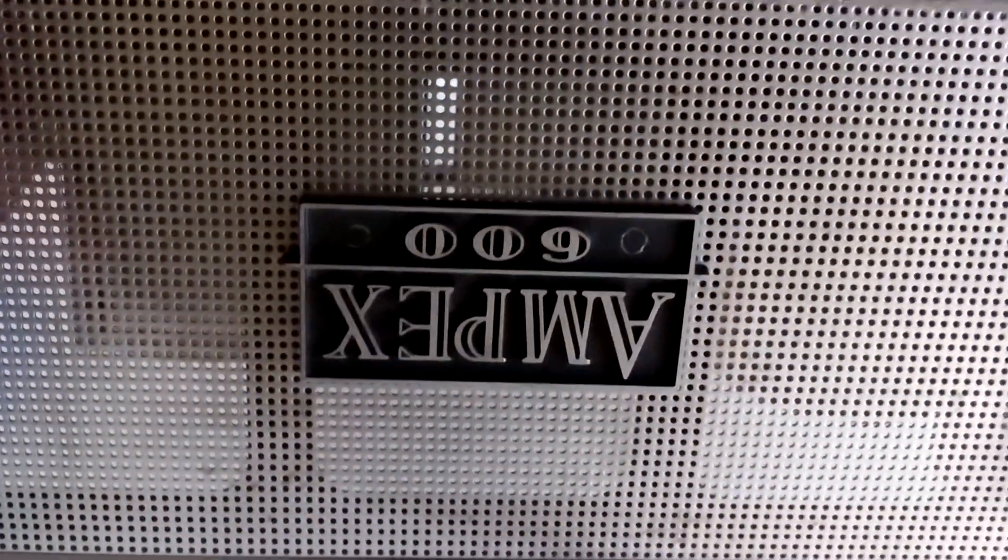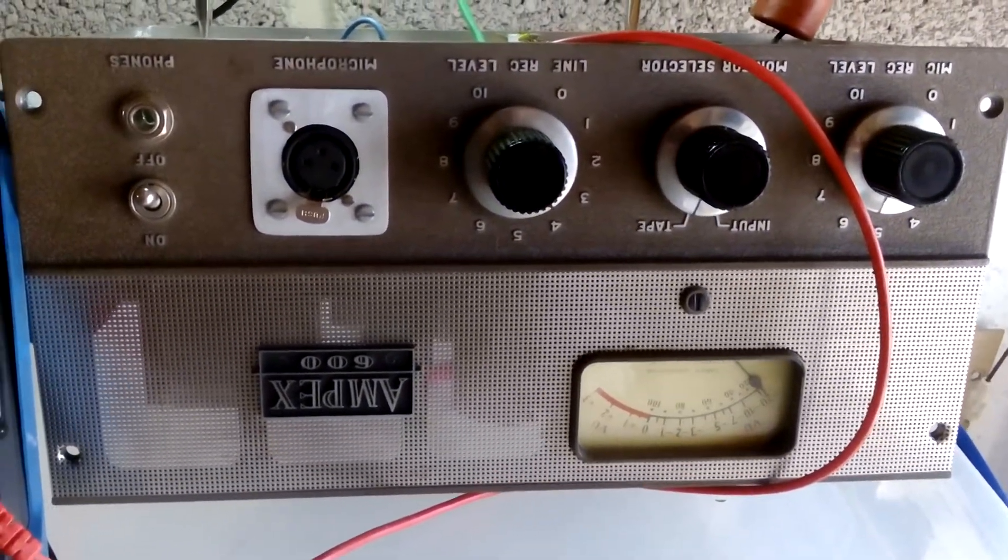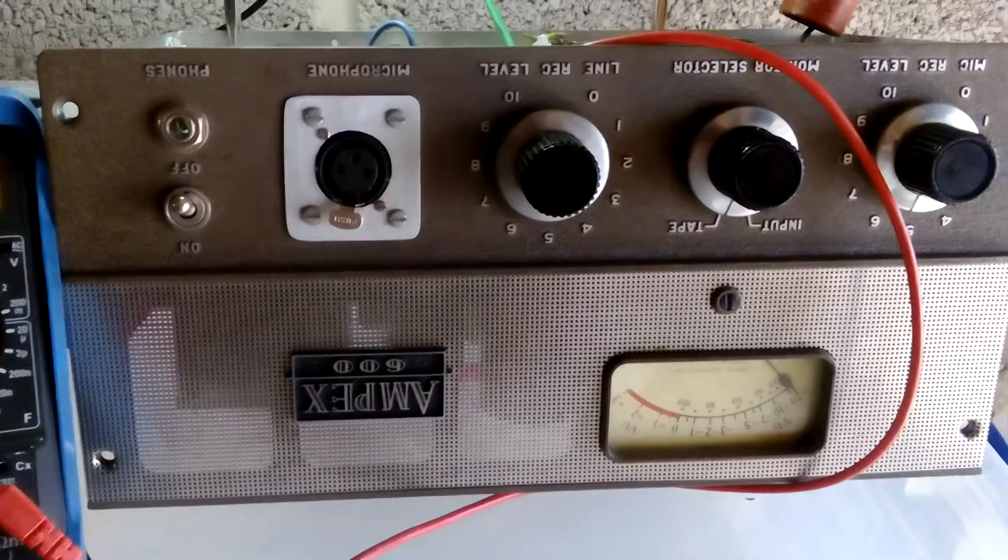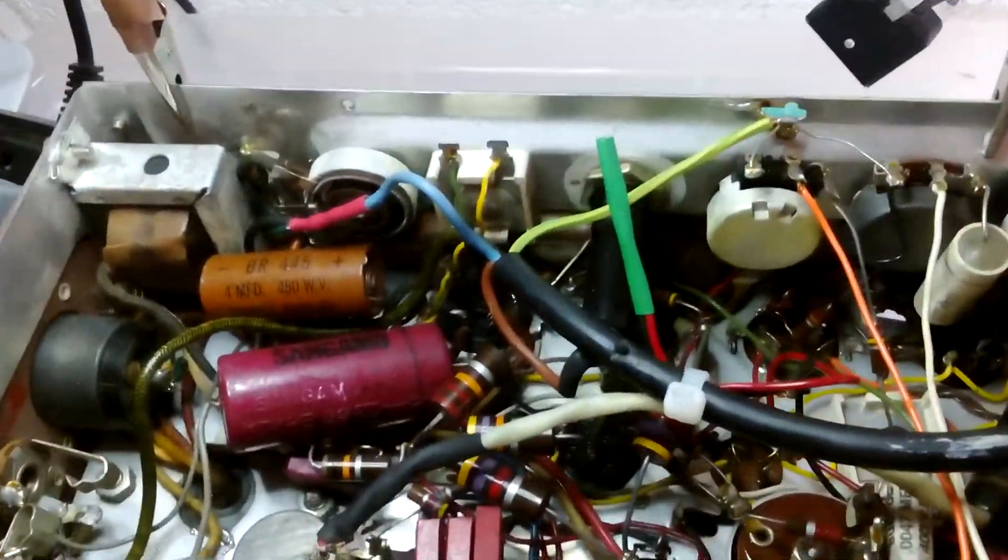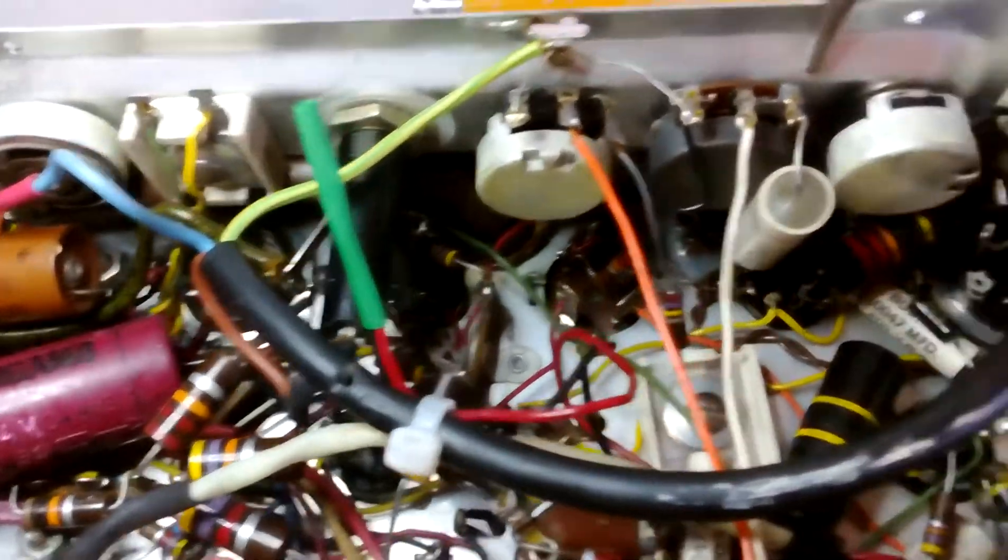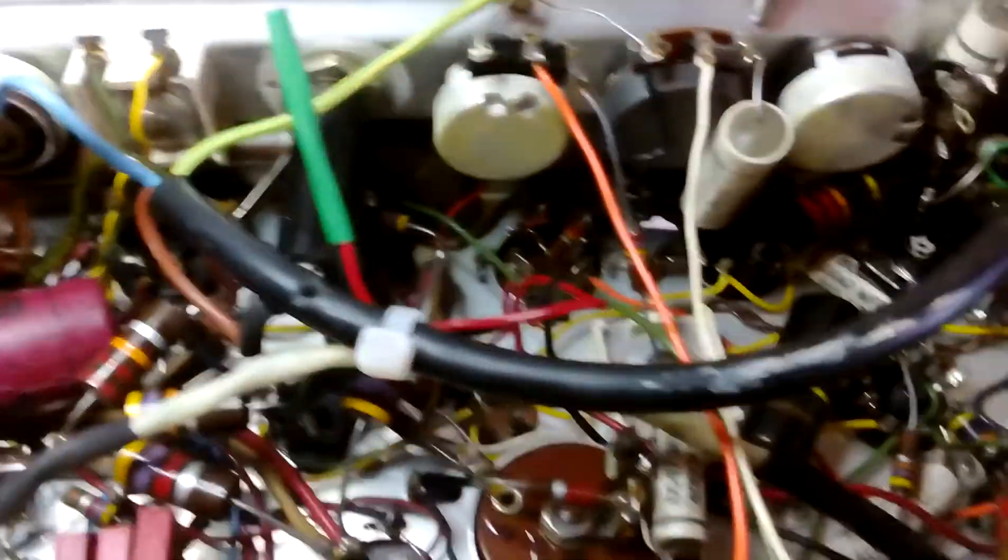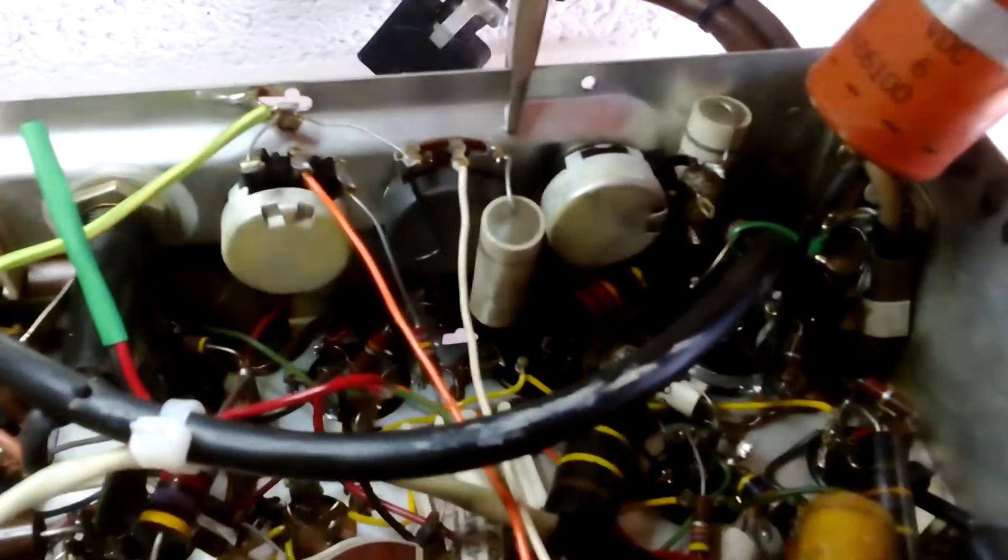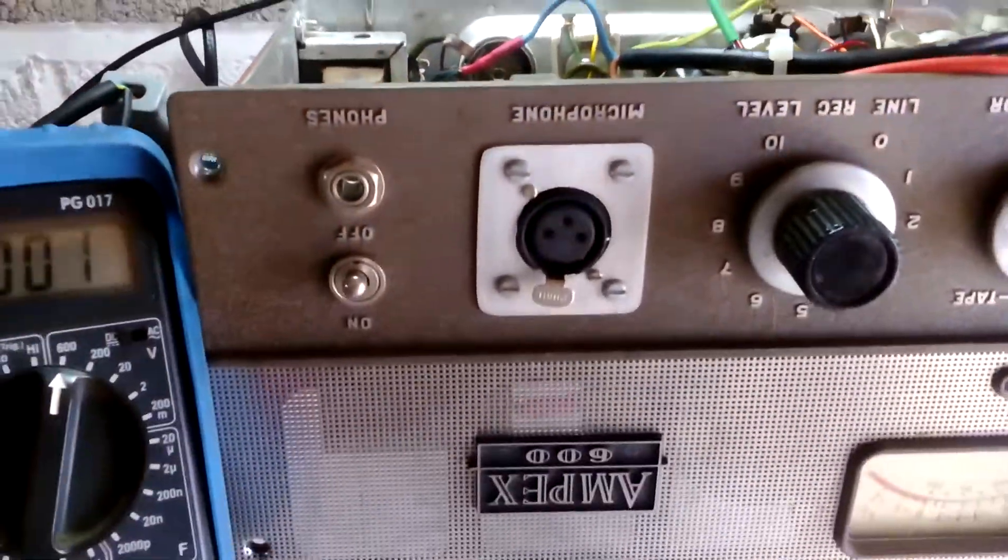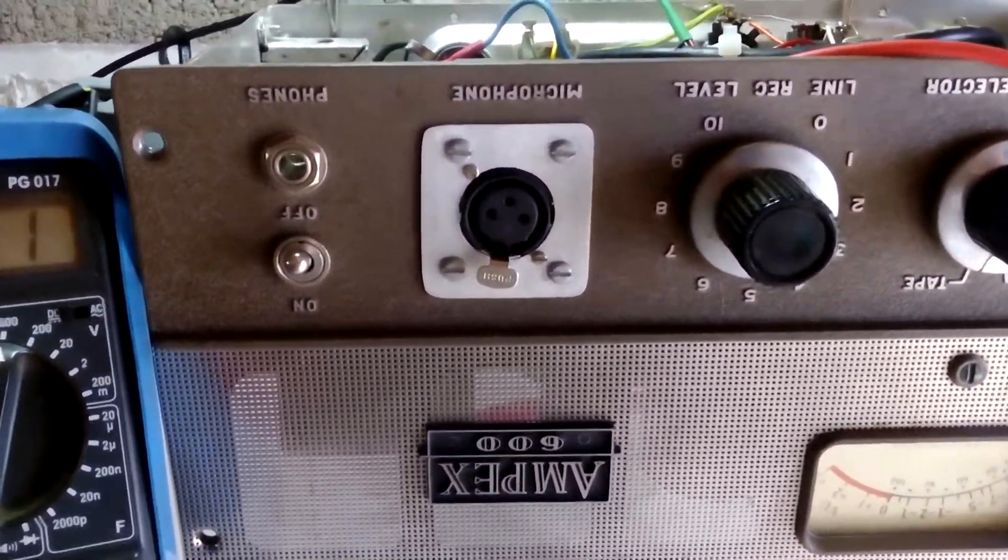Okay, so here we have this beautiful Ampex 600 preamp, vintage thing from the 50s or 60s. I did another video exploring the circuit and relating this tangle of wires to the schematic. Really nice piece of equipment. Look at these old components, fantastic, but there is a bit of a safety issue with this thing.